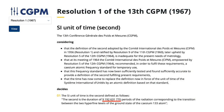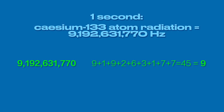The International Committee for Weights and Measures defined the second as the duration of 9,192,631,770 periods of the radiation corresponding to the transition between the two hyperfine levels of the ground state of the cesium-133 atom. Hard to measure, but fairly straightforward. And notably, that number reduces to 9.